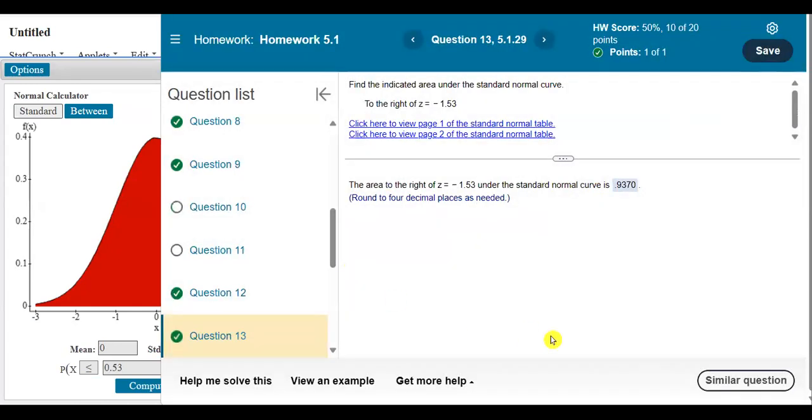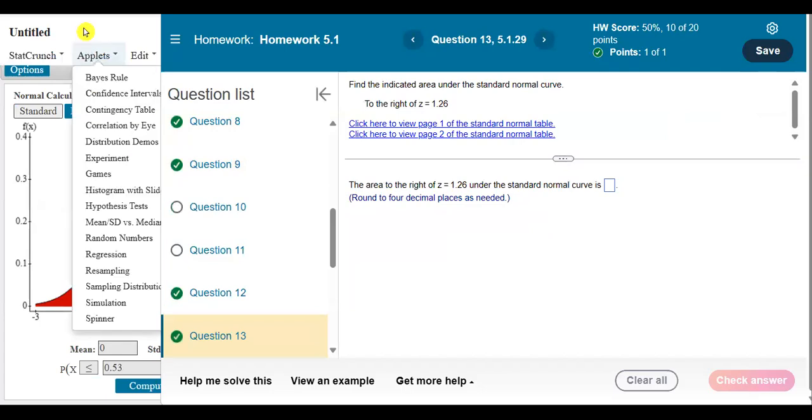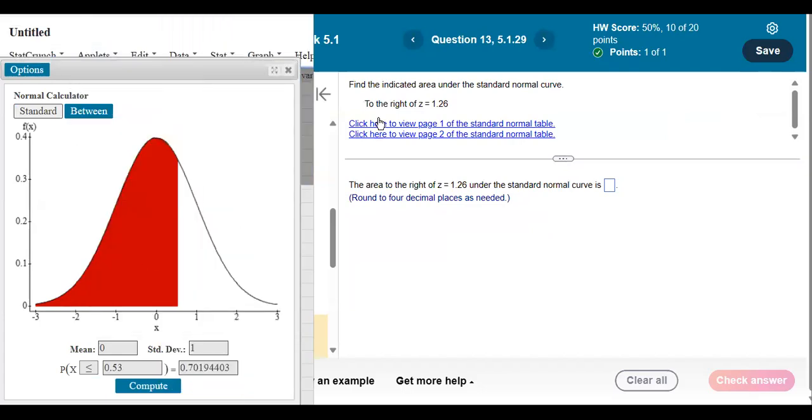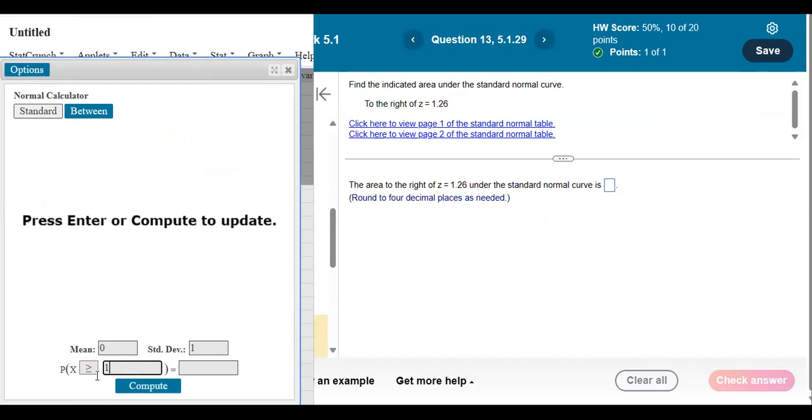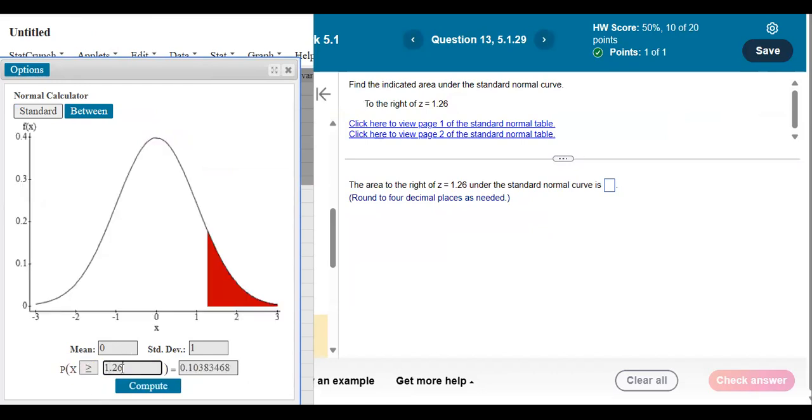Let's see. One more. Just a similar question. Let's go back in the StatCrunch. And we want the area this time to the right. So my symbol should point to the right. Greater than or equal to. And my z-score is 1.26. Enter. 0.1038.